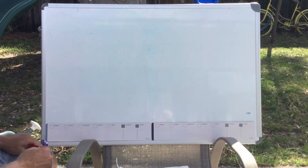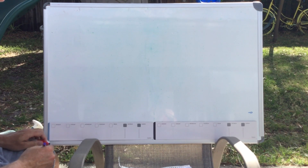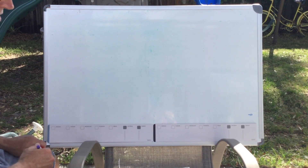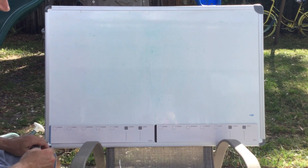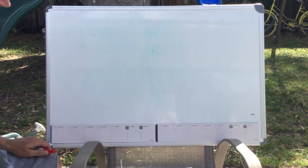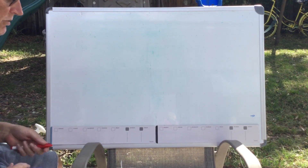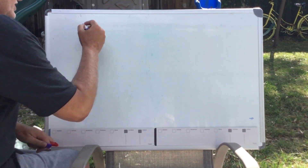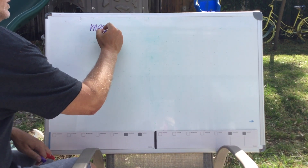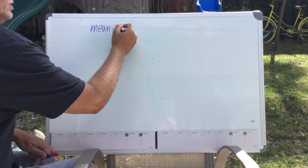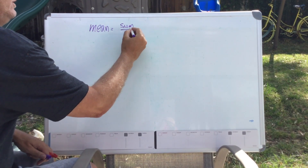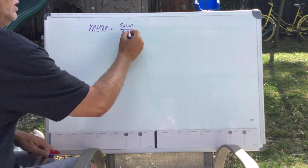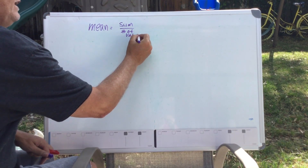Good morning, ladies and gentlemen. I'm going to do problem number five on the 11.2 challenge page — the problem that starts with: the mean of a set of test numbers of 10 numbers is eight. In order to calculate the mean, you add up all the numbers to find the sum, and then you divide by the total number of values in the data set.